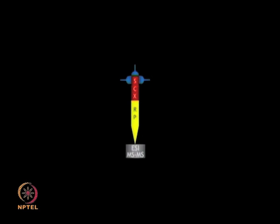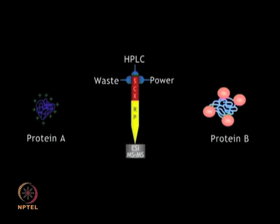Multidimensional protein identification technology or MudPIT is a widely adopted strategy that carries out two consecutive protein separations based on different principles. Earlier, we talked about how one can make use of different properties of strong cation exchange and reverse phase chromatography to separate out peptides. Now use those basic concepts and drag and drop the proteins that will interact with the SCX and RP regions of the columns respectively.